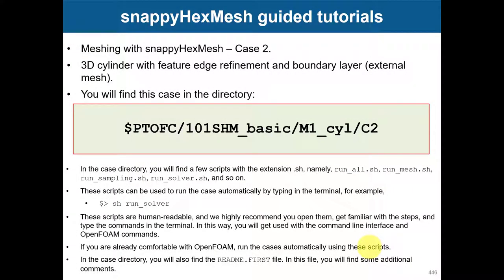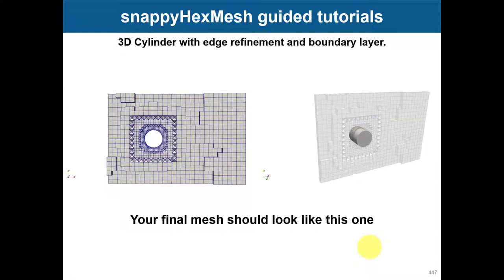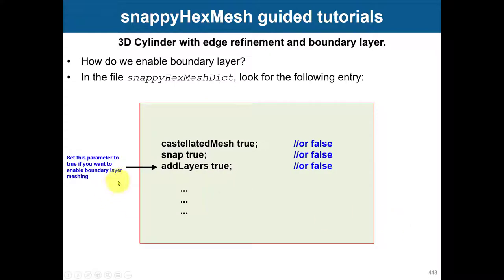Okay, let's move to part two of this tutorial - the cylinder case. We're going to do the same as in the previous part, but we're going to add the boundary layer. Nothing changed - just enable that new flag to do the boundary layer. I'm playing with those parameters. We assume you know what the other parameters are doing. Now put this one to true in SnappyHexMesh.